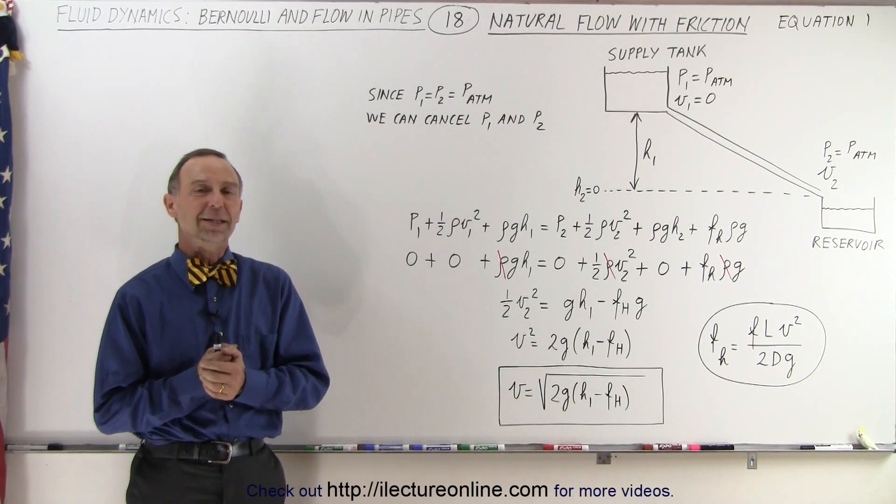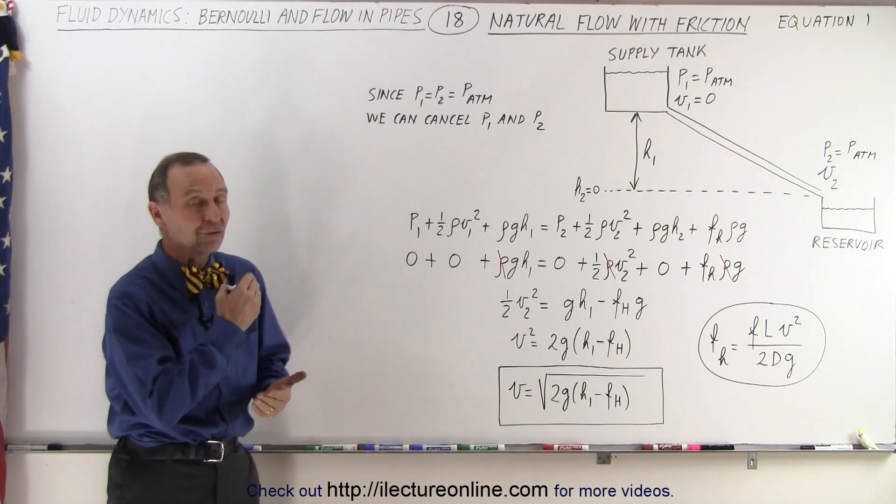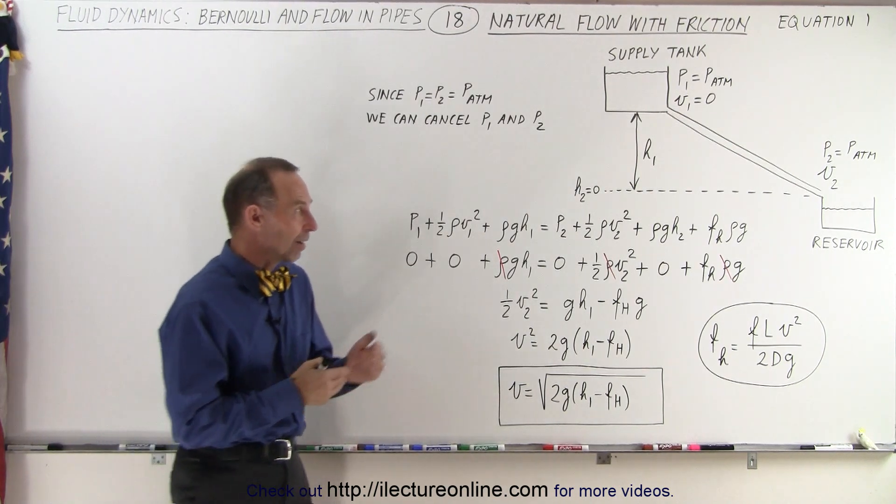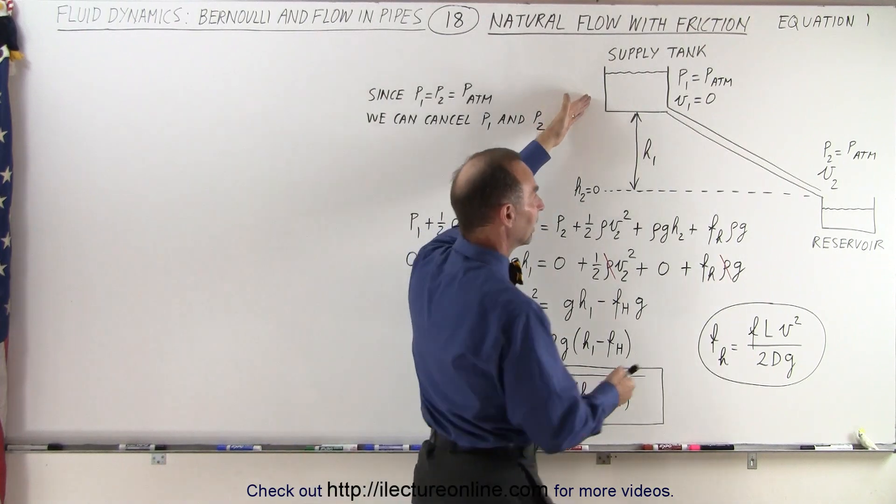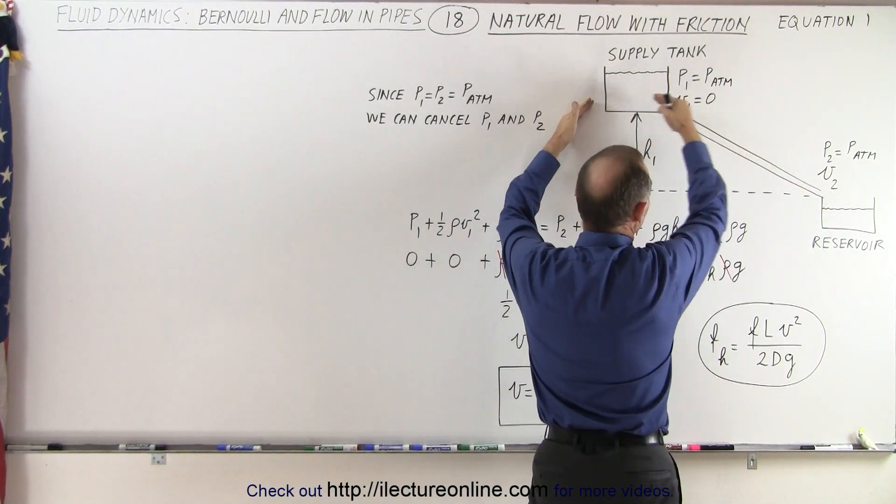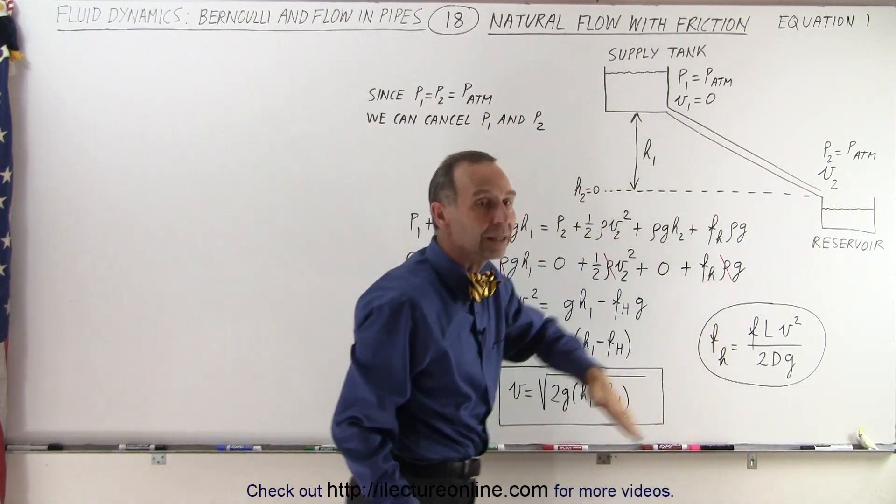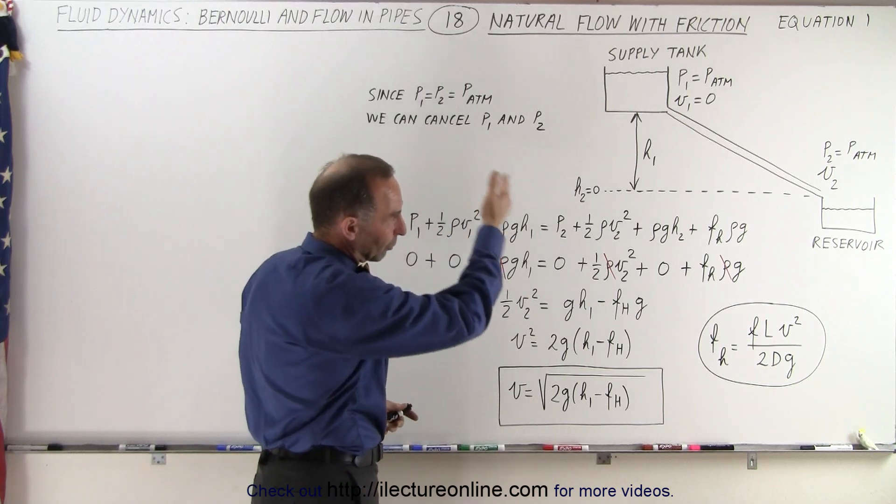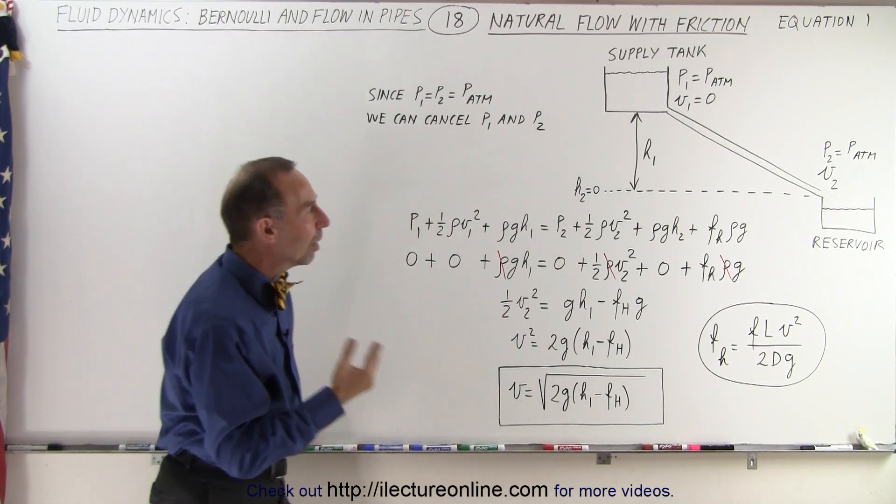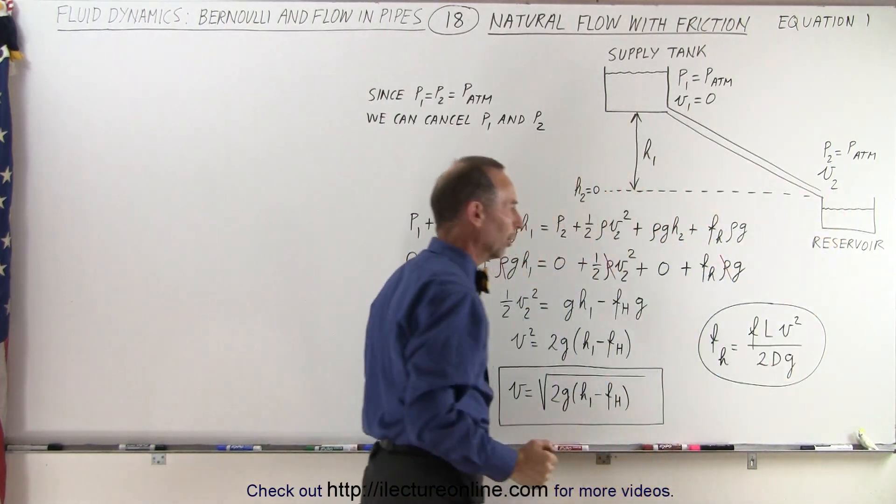Welcome to iLecture Online. In this video we're going to take a look at what we call natural flow with friction. In other words, we have a supply tank and a reservoir. Let's say water is flowing from the supply tank down to the reservoir down a pipe that is at an incline, so we expect water to flow downward. But what is the velocity of the water by the time it gets to the bottom here where it flows into the reservoir?